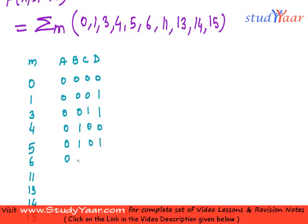6? 6 is 0, 1, 1, 0. 11 is 1, 0, 1, 1. What is 13? 13 is 1, 1, 0, 1. What is 14? 14 is 1, 1, 1, 0. And what is 15? 15 is all 1s.